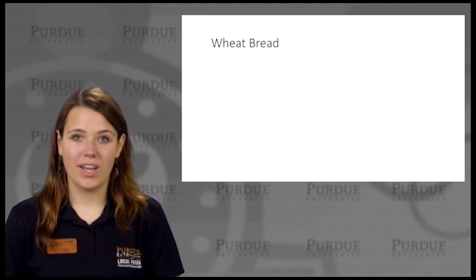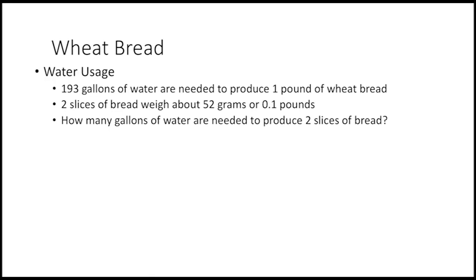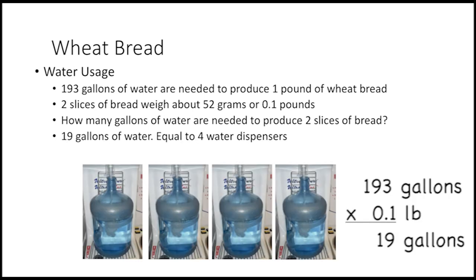First, let's think about the wheat bread. 193 gallons of water are needed to produce one pound of wheat bread. Two slices of bread weigh about 52 grams, or 0.1 pounds. How many gallons of water are needed to produce two slices of bread? 19 gallons of water — that's equal to about four water dispensers.